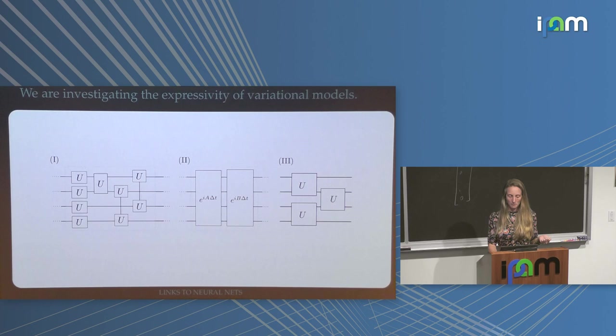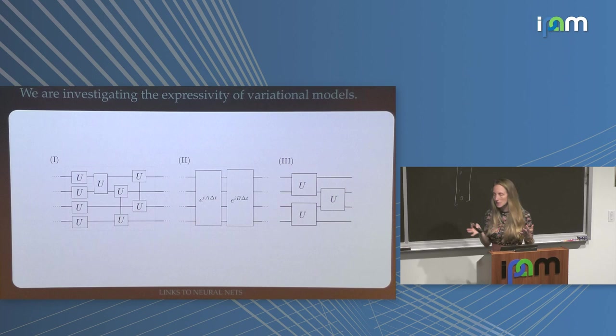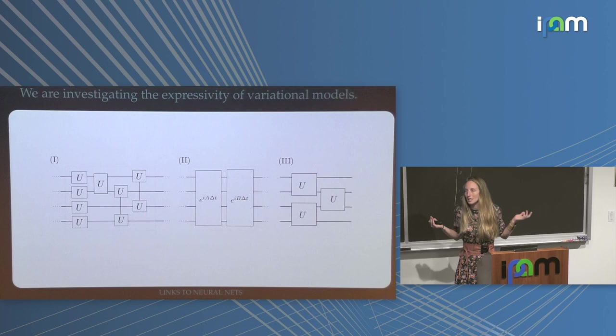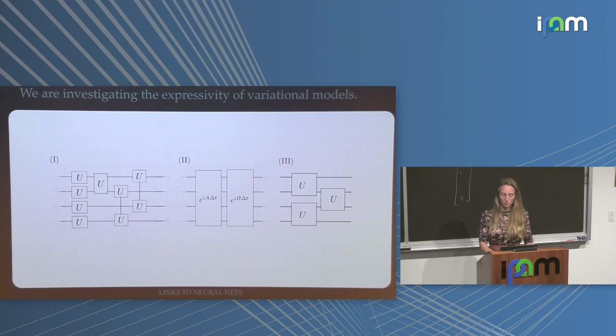Lots of people think about the expressivity of these variational circuits — what's your base circuit ansatz. There are a lot of ideas: for those familiar with quantum computing, there's the QAOA ansatz where you trotterize Hamiltonians, and the tensor network community has many ideas. I find it very hard because I don't actually know if we need expressivity — if a circuit ansatz is very expressive, does that mean it learns well? I don't know. So that's why I skip over that.